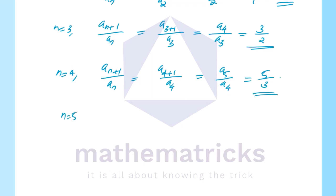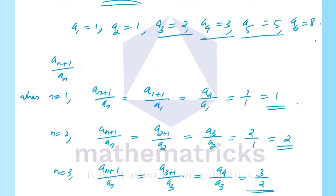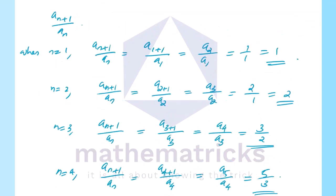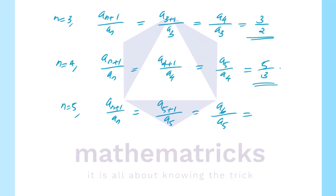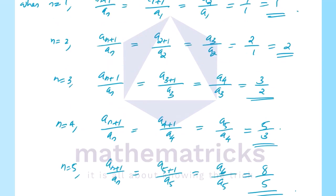For n equal to 5: a_{n+1} divided by a_n equals a6 divided by a5, that is 8 divided by 5. So the answers are 1, 2, 3/2, 5/3, and 8/5 for n equal to 1, 2, 3, 4, 5 respectively. Thank you.